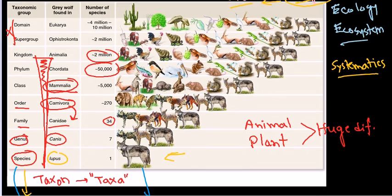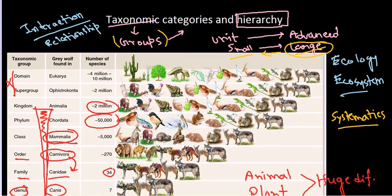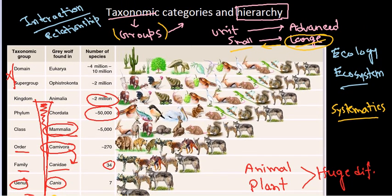This is called the hierarchy of taxonomy, and the relationship of all those individuals with each other is very important to study — that's called systematics. That's it, guys, and I hope that's helpful. Thank you.